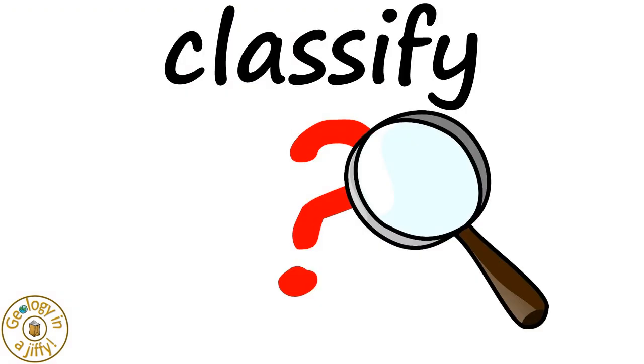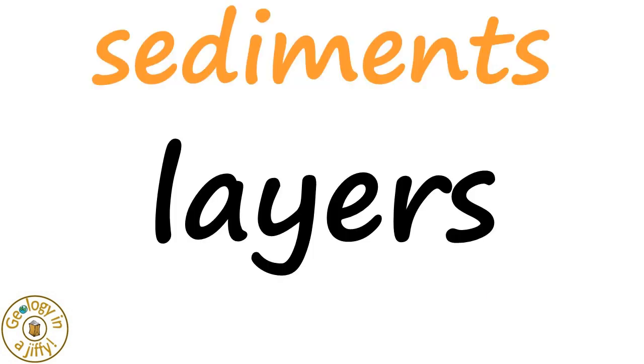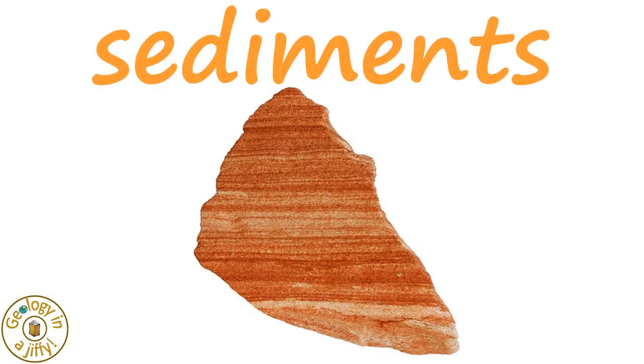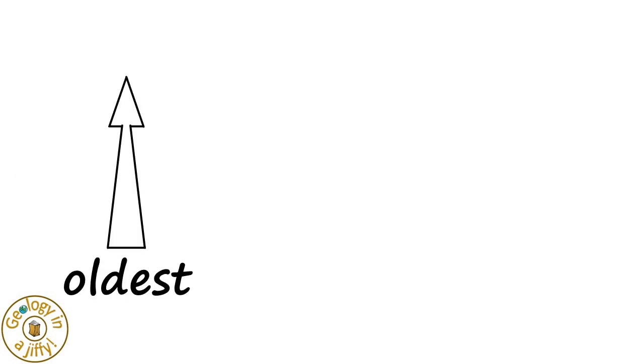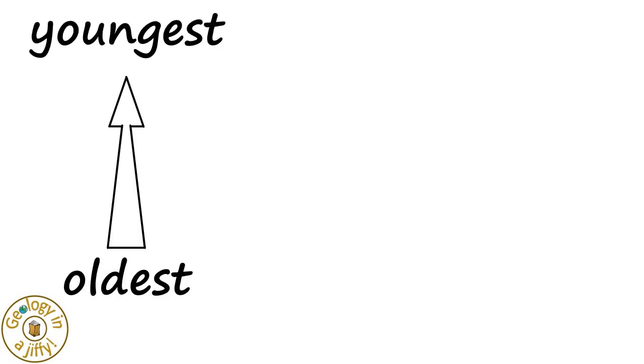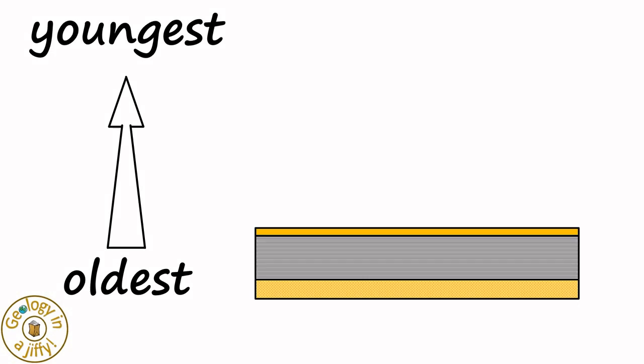Another way to classify a rock as sedimentary is if the sediments are in layers, as we can see in this piece of sandstone. The layers form over time, with the oldest layers at the base building and younging upwards.